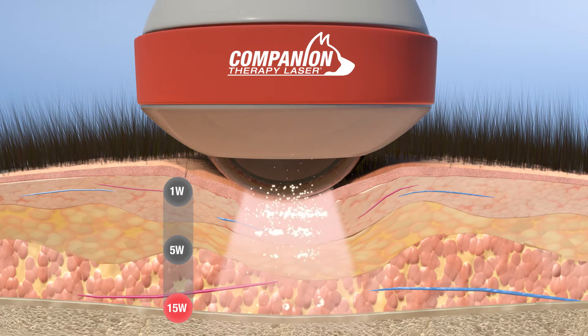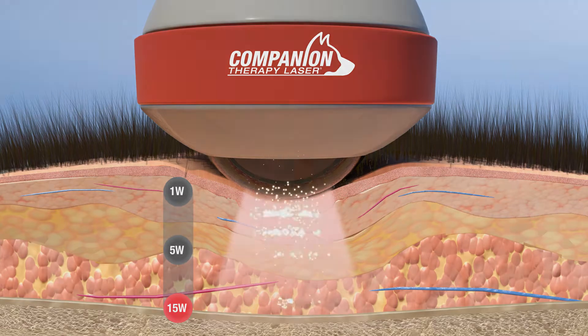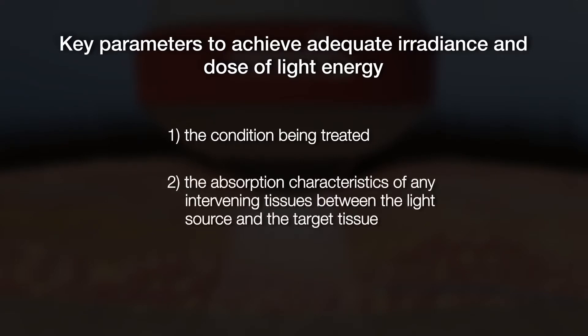Irradiance is critically important in achieving a therapeutic dose of light to target tissue. There are three key parameters to consider to achieve adequate irradiance and safely deliver an effective dose of light energy to target tissue: one, the condition being treated; two, the absorption characteristics of any intervening tissues between the light source and the target tissue; and three, the mechanism of delivery.